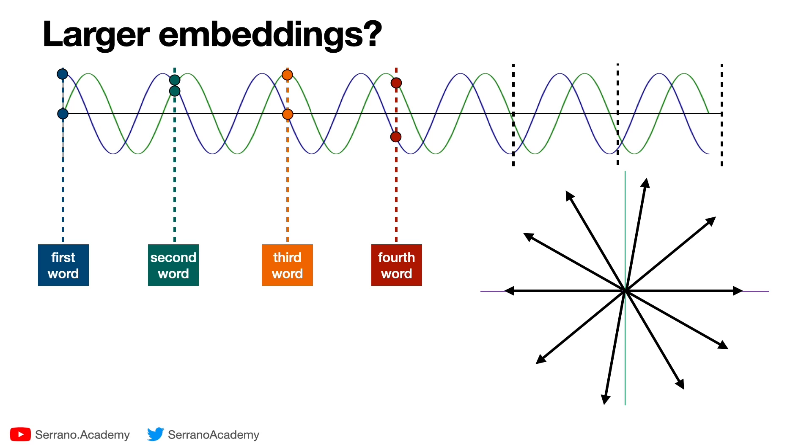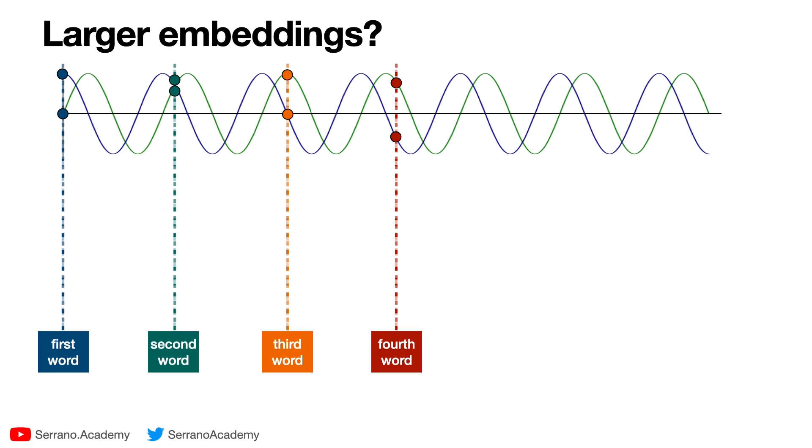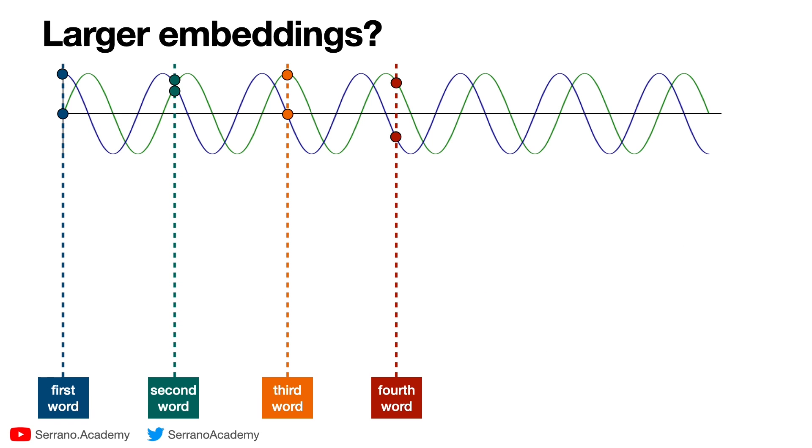And so two questions arise: how do you make sure that this doesn't repeat, and also what happens if the embedding has a lot more numbers? Because we're thinking about an embedding with two numbers. So let's do a slightly bigger one - let's take an embedding of size six, that means each word gets sent to six numbers.